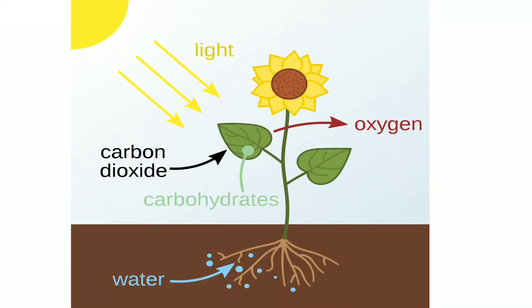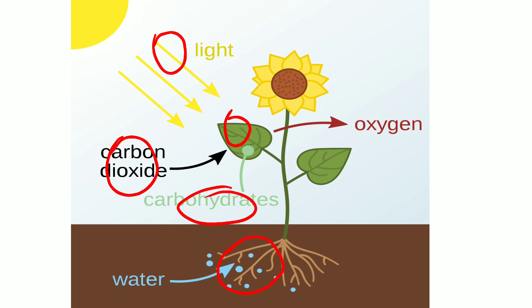To summarize: green leaves take in solar energy from the sun, water is absorbed by the roots, and the green leaves — which contain chlorophyll and water — absorb carbon dioxide from the atmosphere to prepare their own food, which is carbohydrates, and oxygen gas is released. This concept is called photosynthesis.